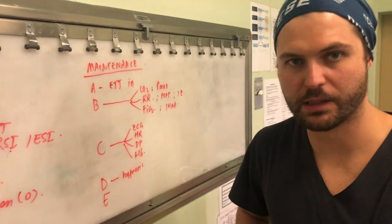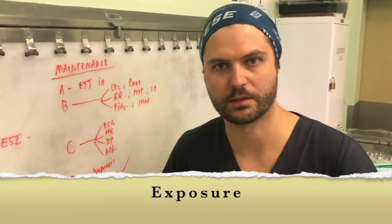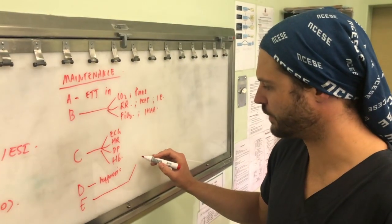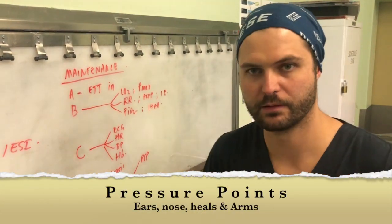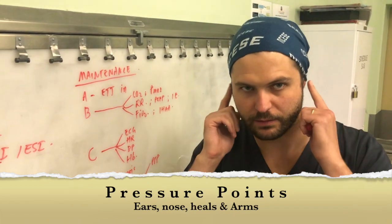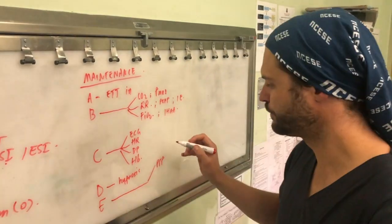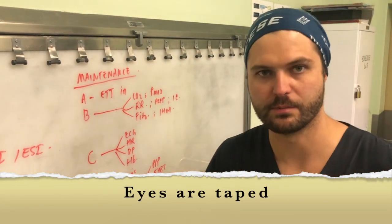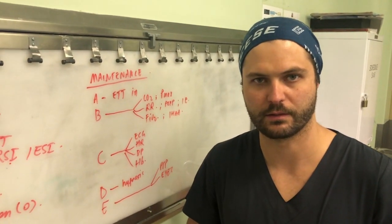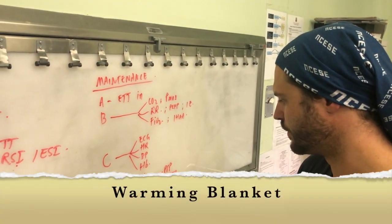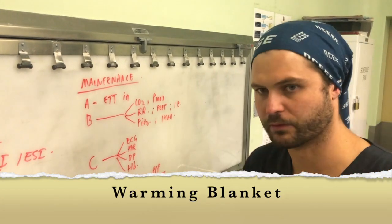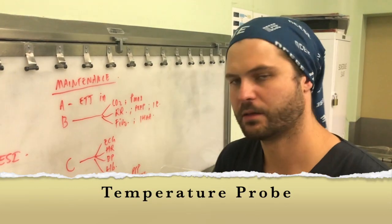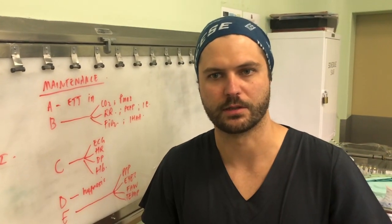E stands for exposure. We want to ensure that our patient's pressure points are protected — specifically ears, nose, heels, and arms. We want to make sure the patient's eyes are taped so they do not get damaged during the anesthetic. We want to ensure the patient has a forced air warmer to keep them warm, and the patient needs a temperature probe so we can monitor temperature intraoperatively.